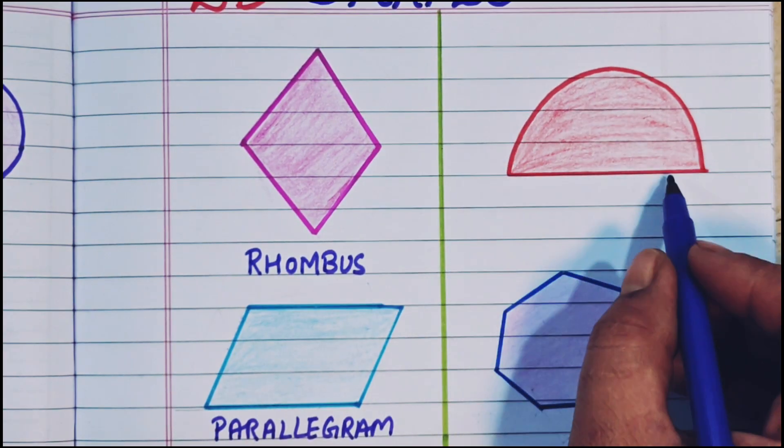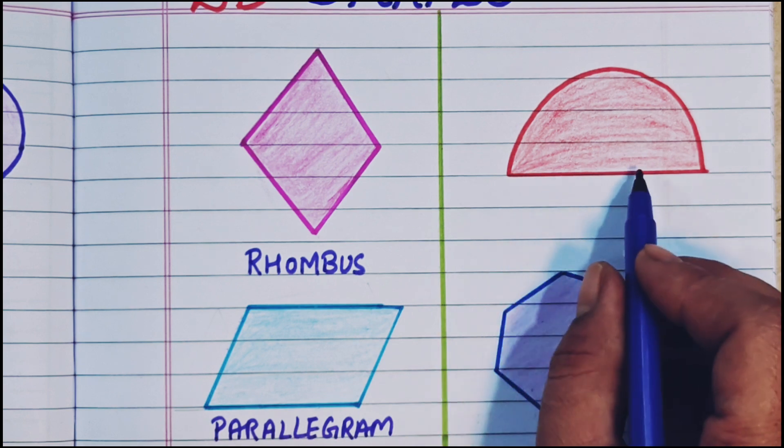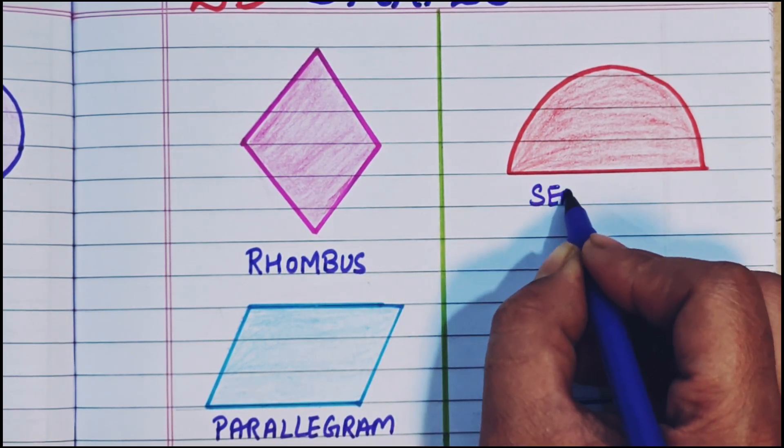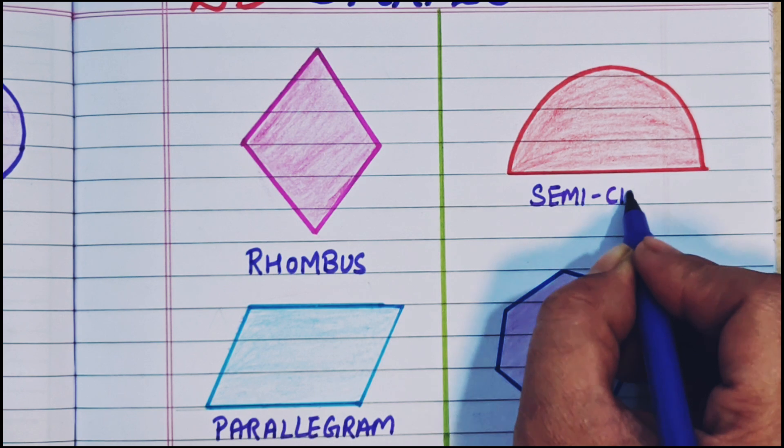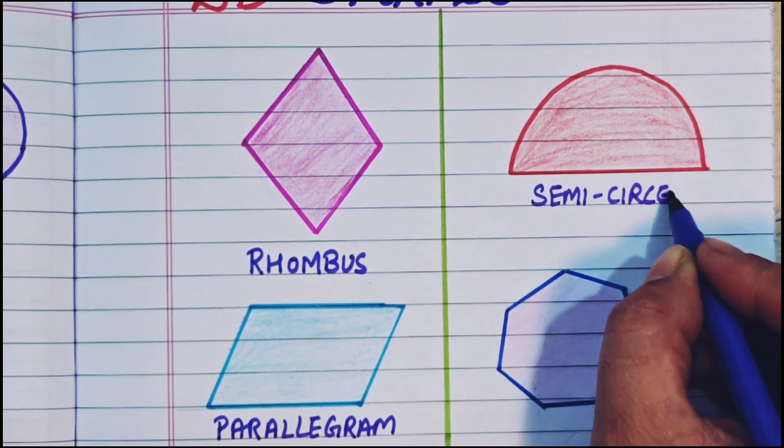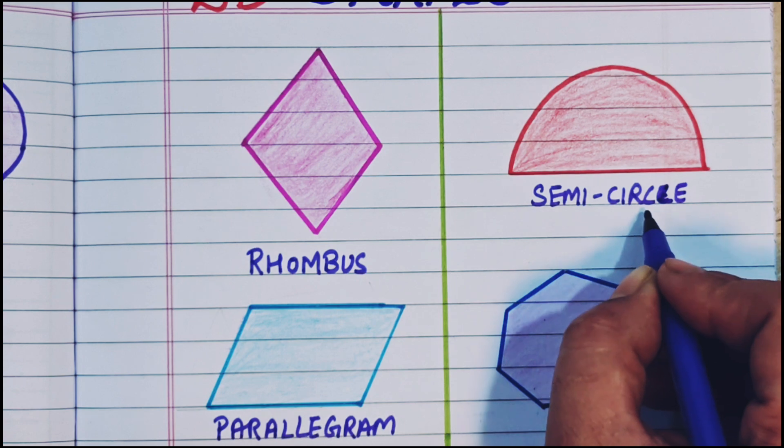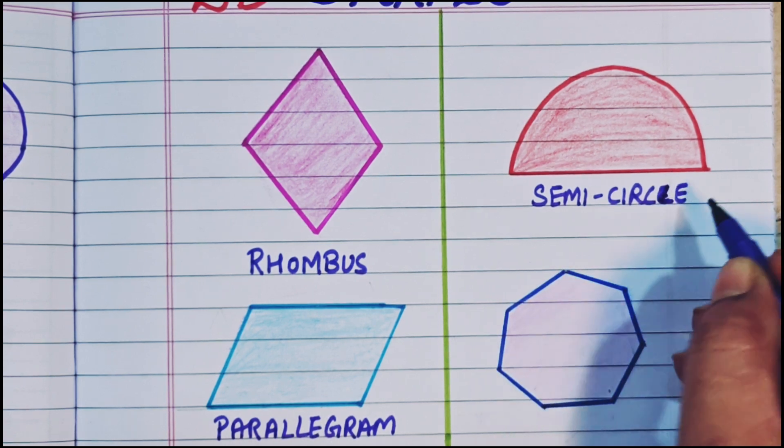Now this is a semi-circle. It is a circle which is cut into 2 pieces. So this is a semi-circle. S-E-M-I-C-I-R-C-L-E. Semi-circle.